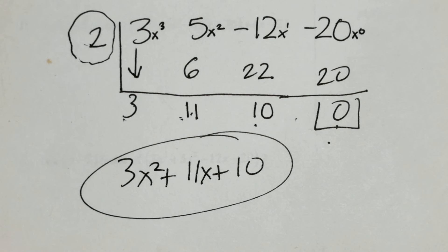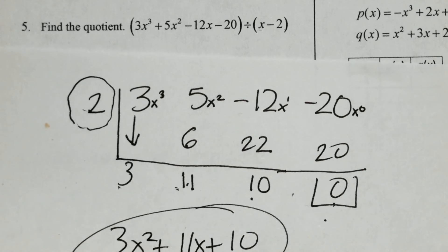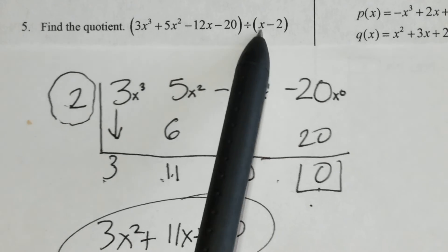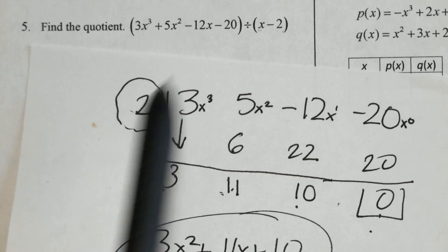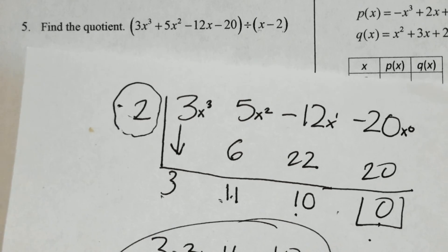What does no remainder mean? It means that x subtract 2, x subtract 2, is a factor. So, if x subtract 2 is a factor, that means that 2, the root 2, is an x-intercept or a real root of this.